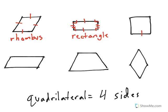Over here, it looks like all the sides are equal length, and there are four right angles. A shape where every side is the same and there are four right angles is called a square.